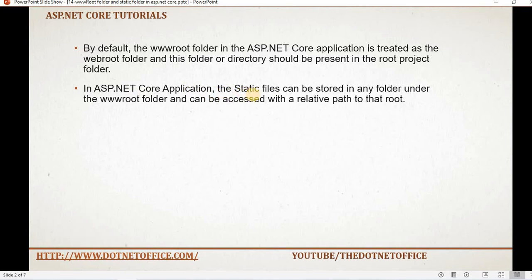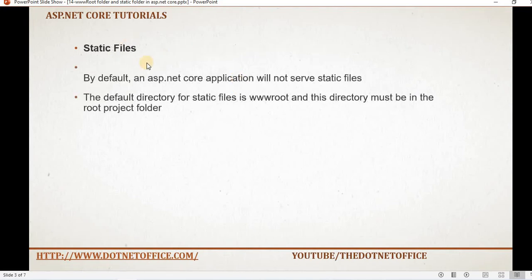When we create an ASP.NET Core application with a web or MVC template, by default this wwwroot folder is created for us. But when we create an ASP.NET Core application with the empty template, we don't see this wwwroot folder and we have to add it manually. By default, an ASP.NET Core application will not serve static files. The default directory for static files is wwwroot and this directory must be in the root project folder.